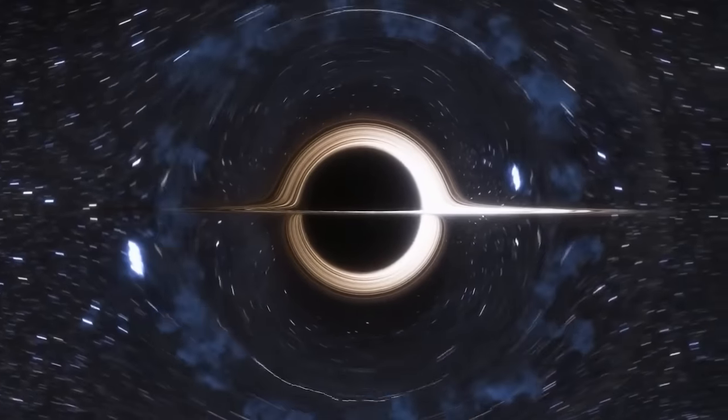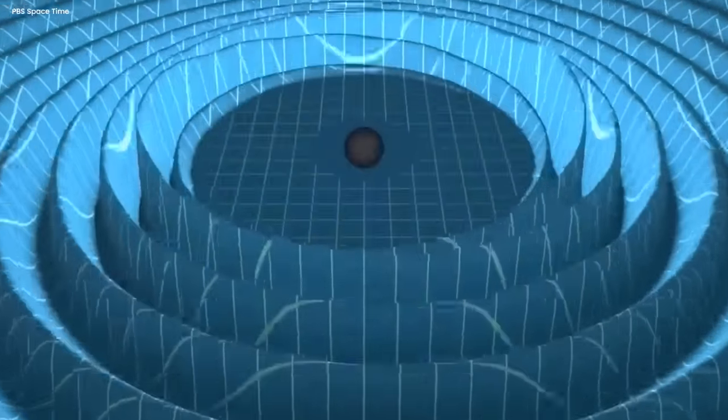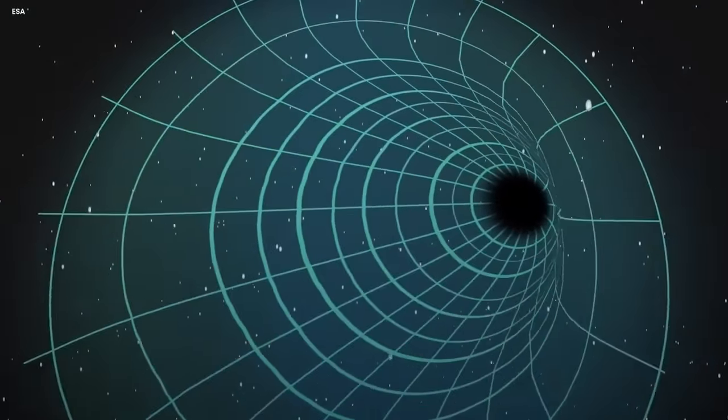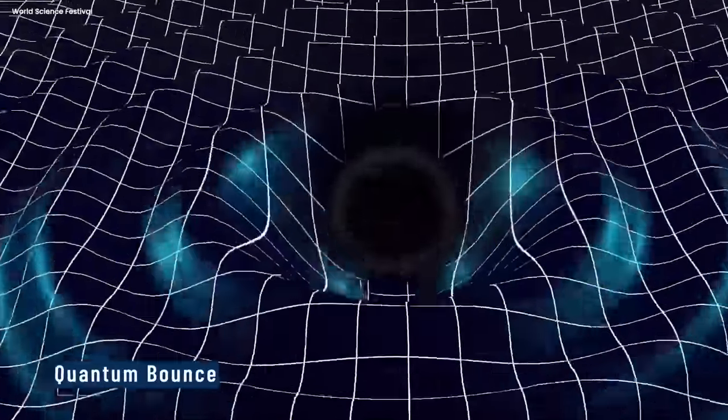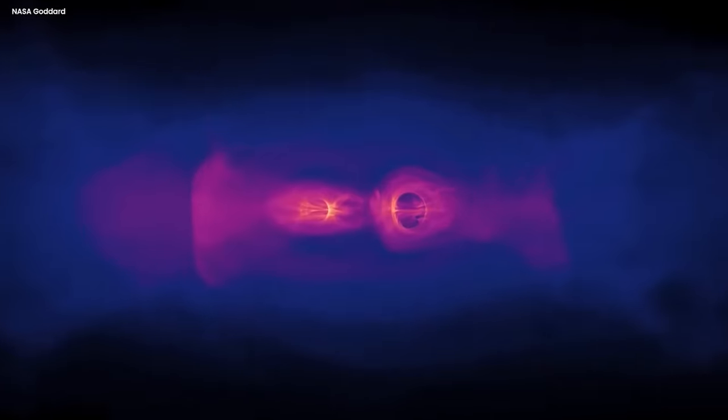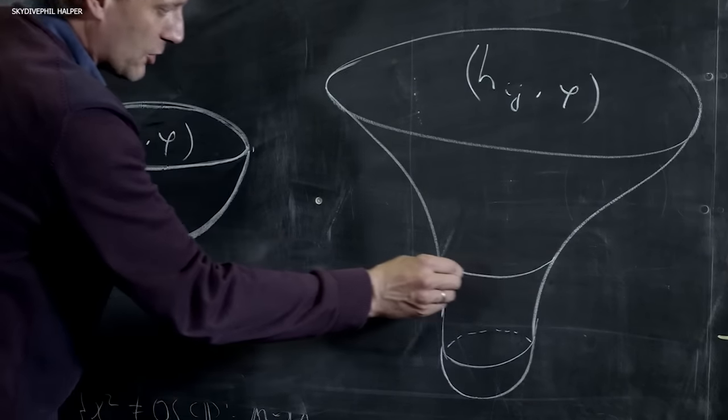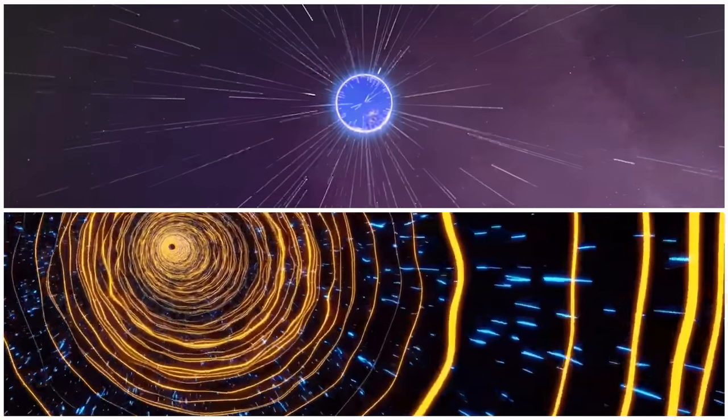For instance, in the context of black holes, loop quantum gravity suggests that as matter collapses toward the core, spacetime becomes increasingly small. This prevents matter from reaching an infinitely dense singularity. Instead, the collapsing matter encounters a quantum bounce near the core, where it rebounds and begins to expand once more. This scenario leads to the creation of a new region inside the black hole, often called a quantum black hole or bounce region. The bounce region replaces the classical singularity, offering a potential resolution to the singularity problem.